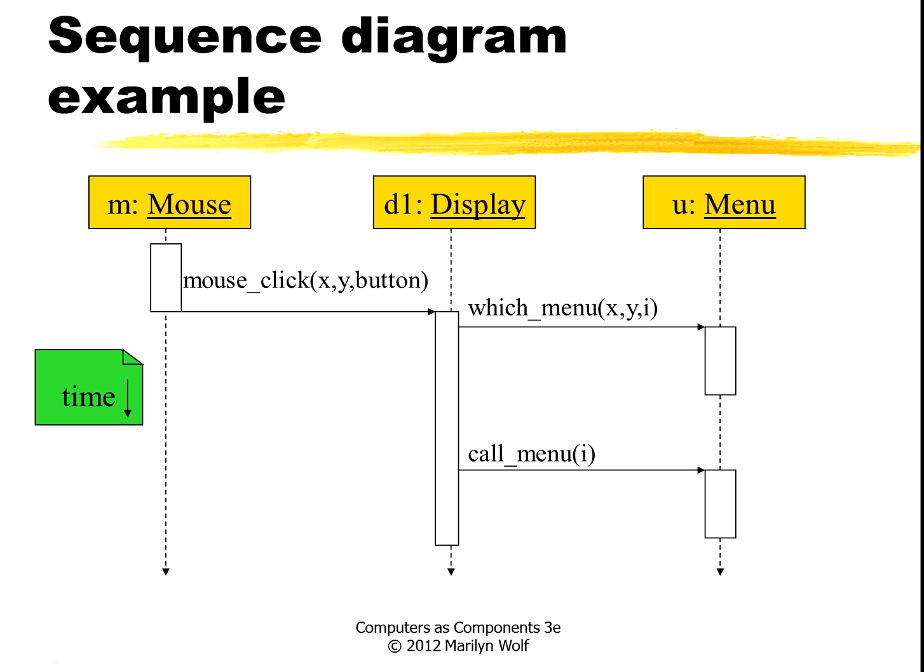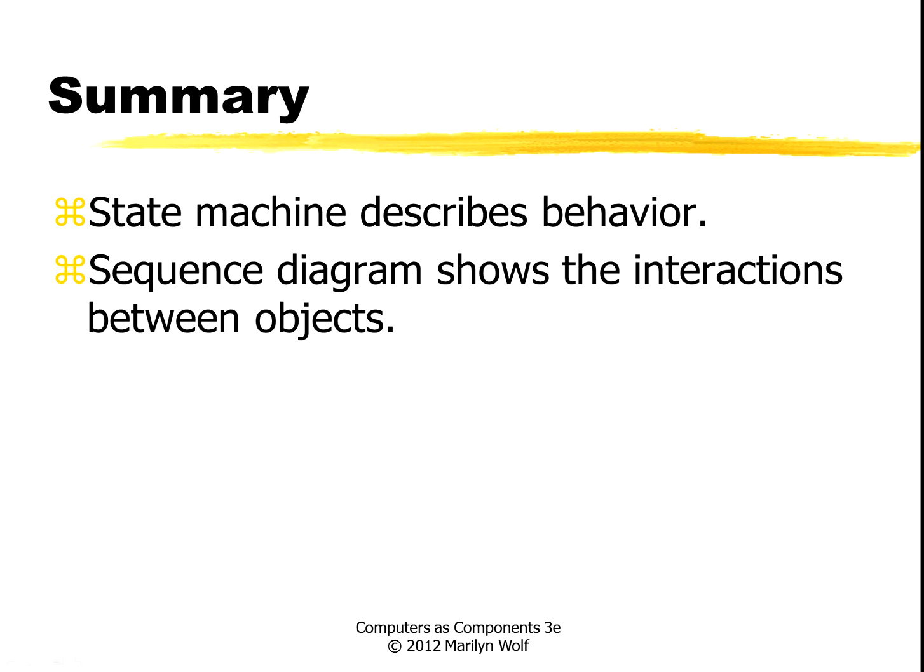So the sequence diagram shows the relationship between what the mouse is doing, what the display object is doing, and what the menu is doing. And we can see by looking across here what objects are active at any given time. We can use state machines to describe behavior, and we can use sequence diagrams to describe the interactions between objects.